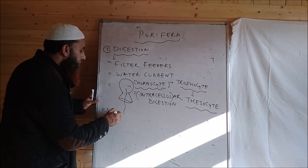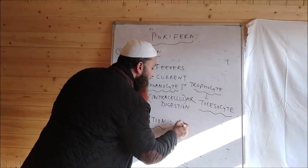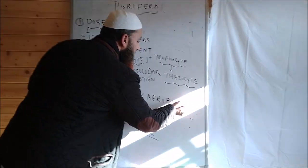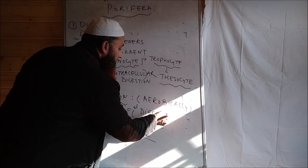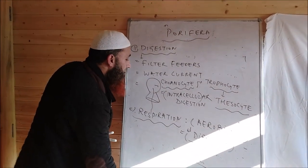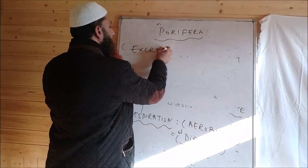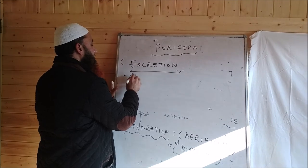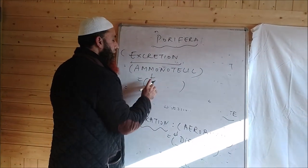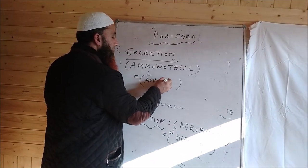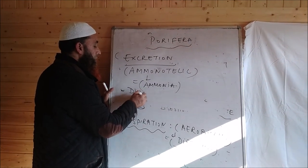For respiration, since sponges are found in water, they respire aerobically. Respiration occurs through the general body surface by the process of diffusion. For excretion, these animals are ammonotelic — they produce the toxic nitrogenous waste known as ammonia — and excretion also occurs by the process of diffusion.